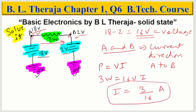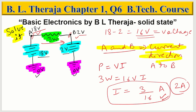But the answer in the book is 2A, which according to me is wrong. So 3/16 A is the correct answer. This direction will be A to B — remember this. The current direction is A to B and the magnitude of current is 3/16 A.